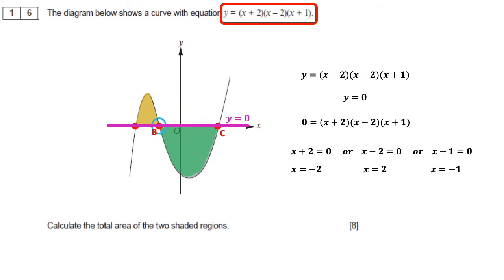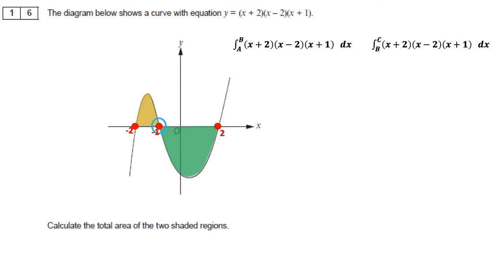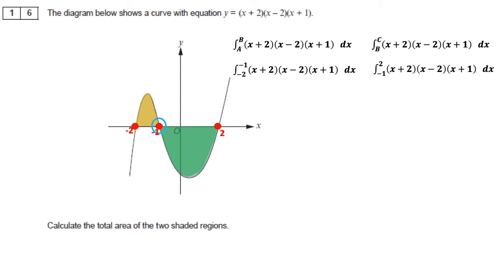So a equals minus 2, b equals minus 1, and c equals 2. We now have the definite integral of (x plus 2)(x minus 2)(x plus 1) between minus 1 and minus 2 for the yellow area, and the same integrand between limits 2 and minus 1 for the green area.